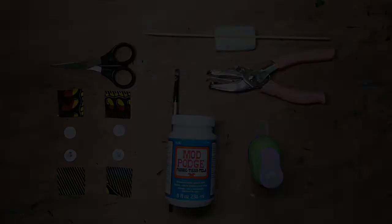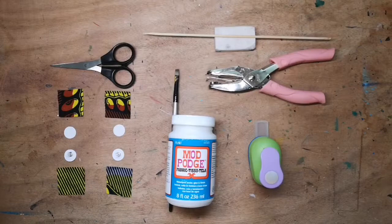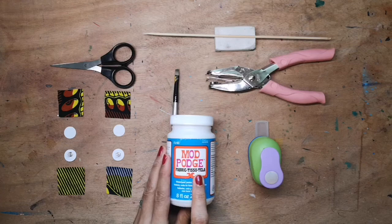For this project you will need a few things. You'll need Mod Podge fabric tissue glue. You can get this on Amazon and lots of craft shops and you'll need a brush to apply it.